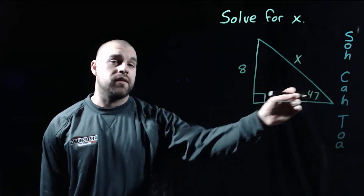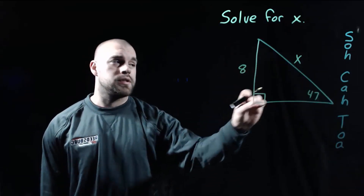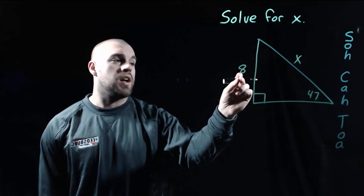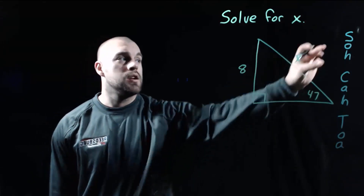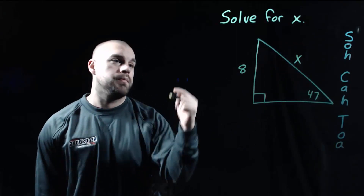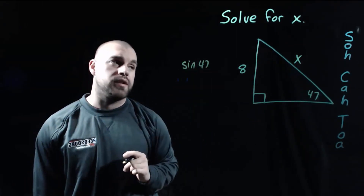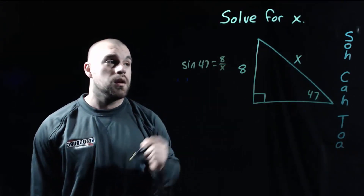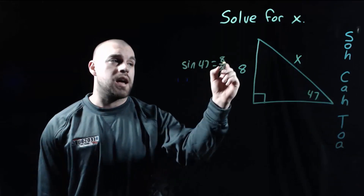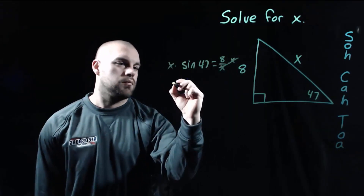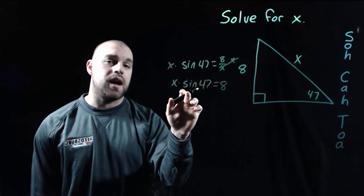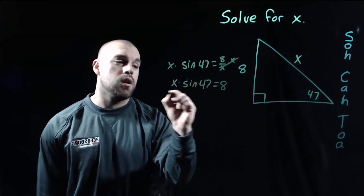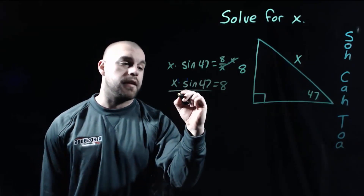In our last example, we're given a 47-degree angle. 8 is our vertical side and X is going to be our hypotenuse. We've got the opposite side and the hypotenuse, so this is going to be a sine equation. We go sine of our 47-degree angle equals the opposite side 8 over the hypotenuse X. We multiply both sides by X, giving us X times the sine of 47 equals 8, then divide both sides by the sine of 47.